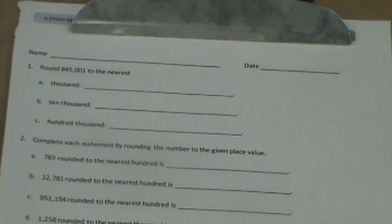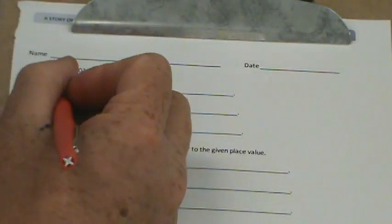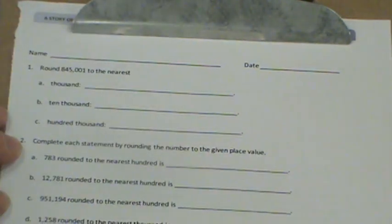We're just going to do a quick review of some of the problems, not all. Round 847,001 to the nearest thousand, ten thousand, hundred thousand.